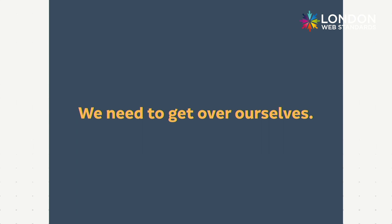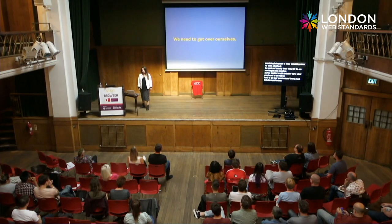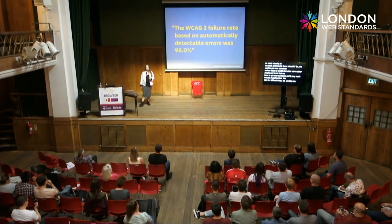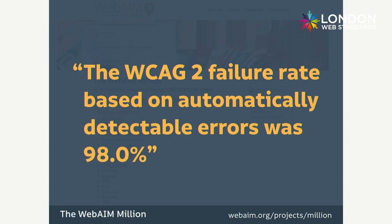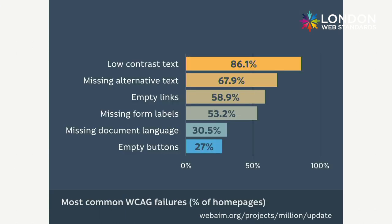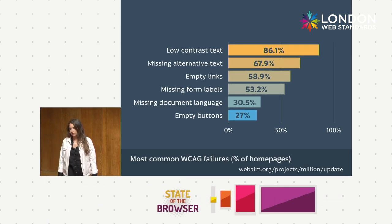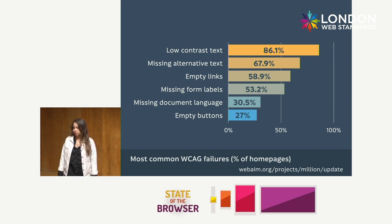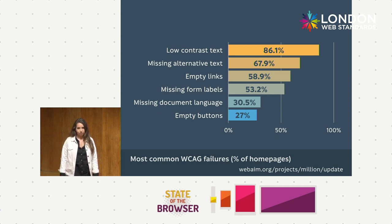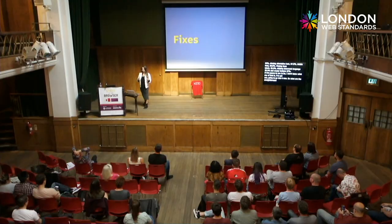We need to get over ourselves and better serve other people. So working back to the WebAIM one million pages: the failure rate based on automatically detectable errors is 98% — that's the most recent version run this August. The top accessibility errors found are: low contrast text at around 86%, missing alternative text at 67.9%, empty links at 58.9%, missing form labels at 52.2%, missing document language at 30.5%, and empty buttons at 27%.